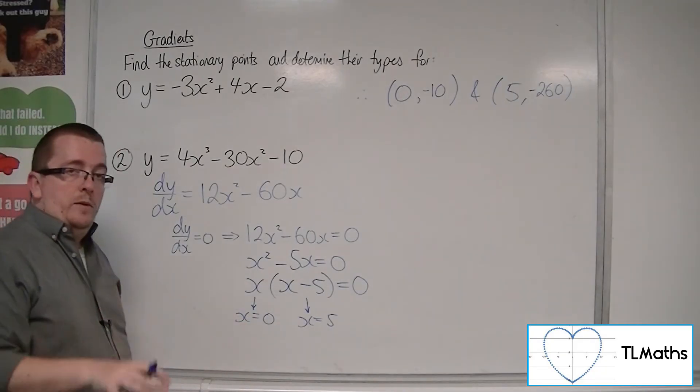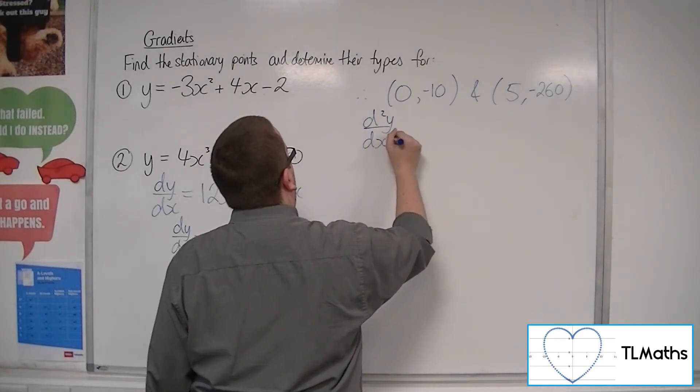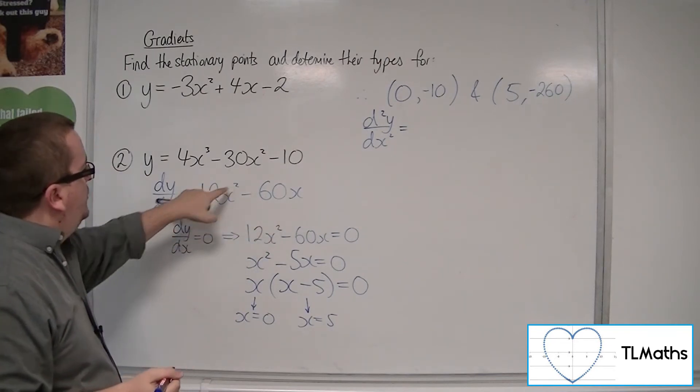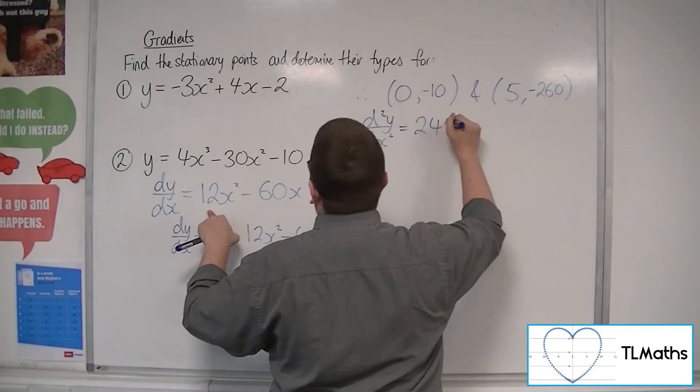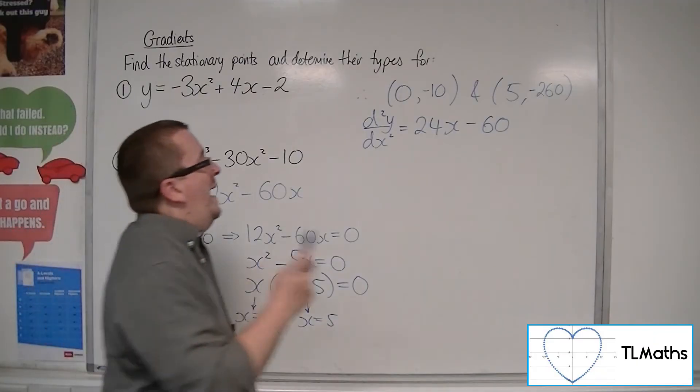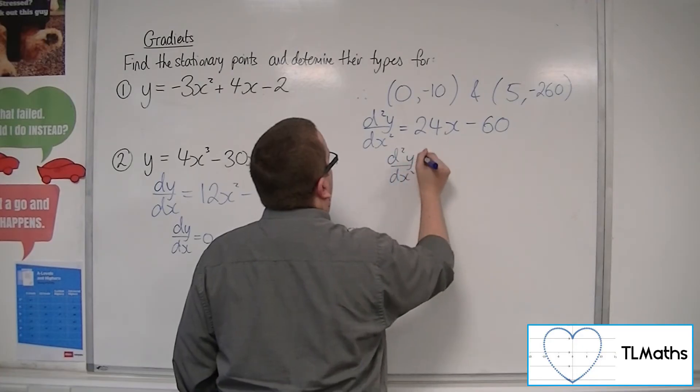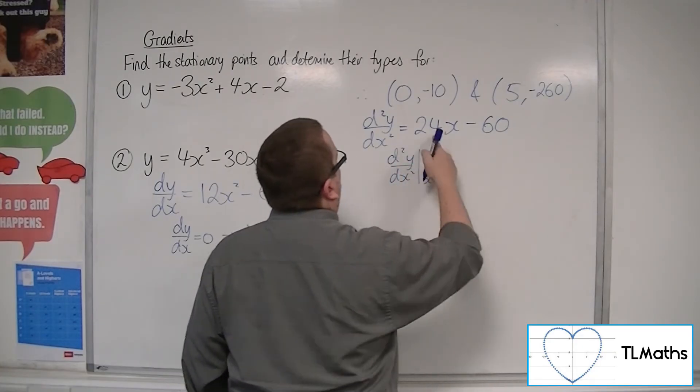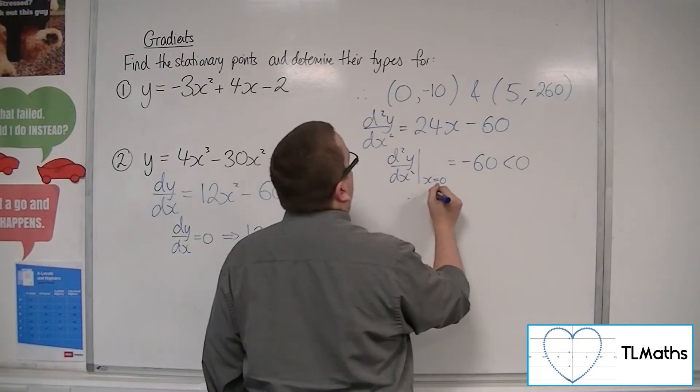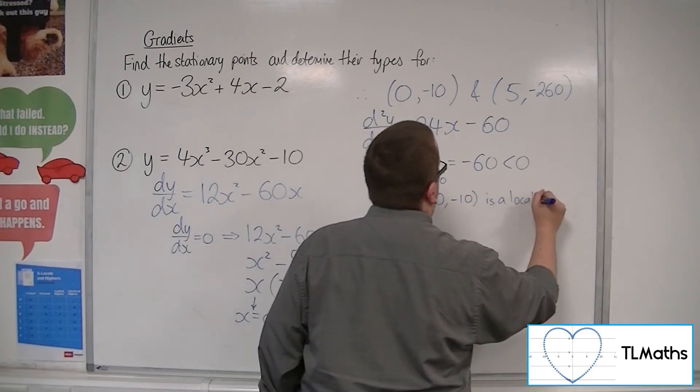Now I want to determine their type. In order to do that, I find the second derivative. d2y by dx squared. So I differentiate this. Now, the 2 will come down and multiply the 12. So I'm going to have 24x take away 60. And then I substitute in the two x coordinates of the stationary points. So d2y by dx squared, when x is 0, will just be minus 60. So because that's negative, 0 minus 10 is a local maximum.